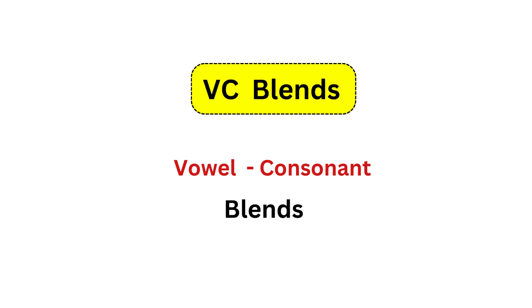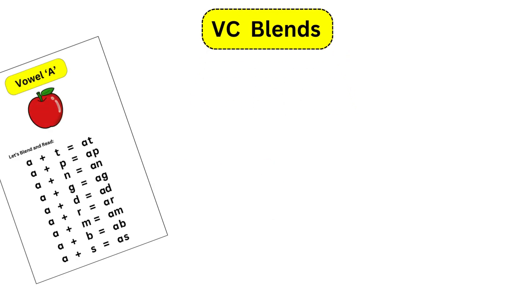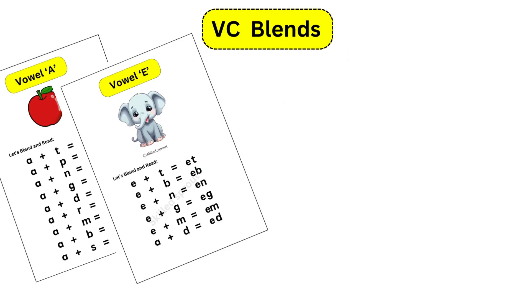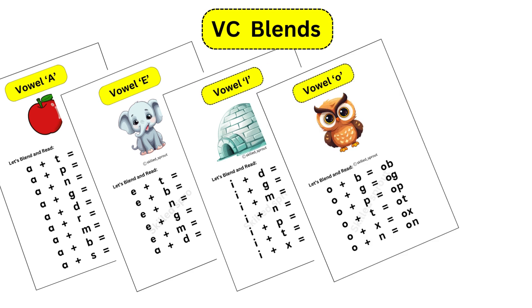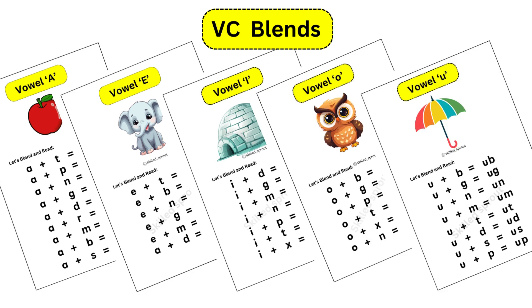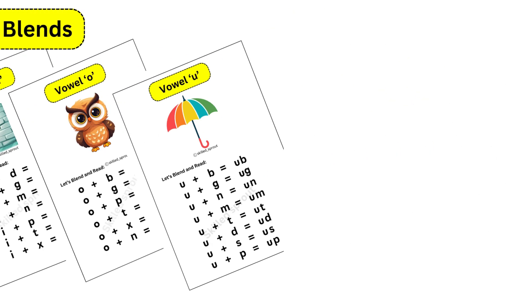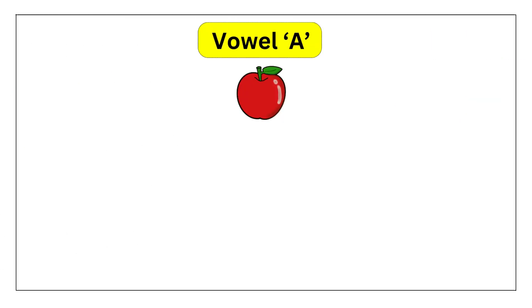Vowel Consonant Blends. Let us learn how to blend and read VC combinations. First, let's see Vowel A.